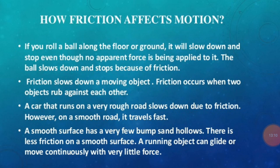A car that runs on a very rough surface slows down due to friction. However, on a smooth surface it travels fast because on a rough surface there are more irregularities and more interlocking between the two surfaces. On a smooth surface, the irregularities are less and interlocking is less, so the car runs smoothly. A smooth surface has very fine bumps and hollows and there is less friction, so a running object can glide or move continuously with very little force.